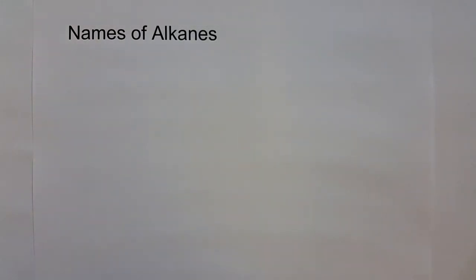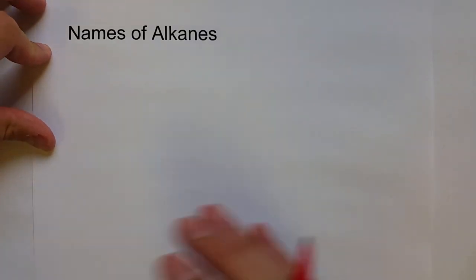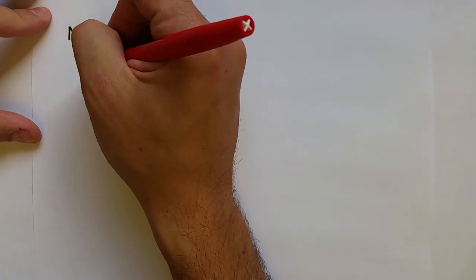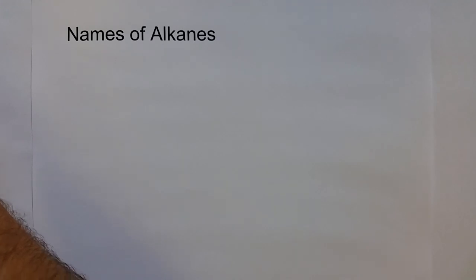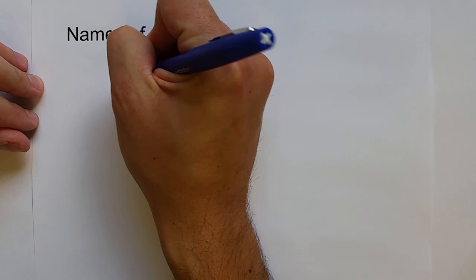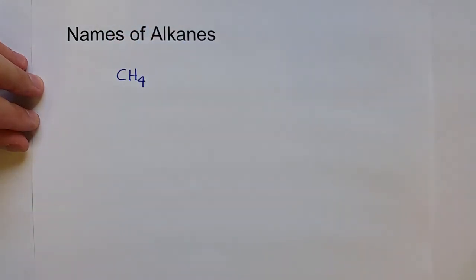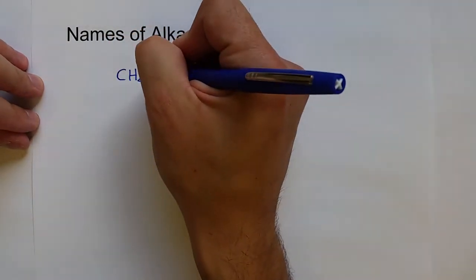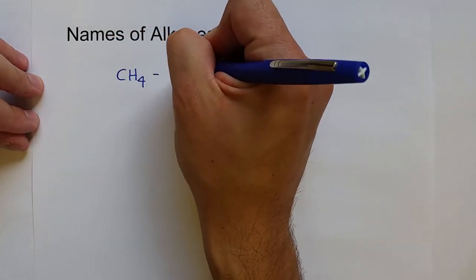The next thing we're going to want to be able to do is to come up with names for all of our alkanes. There's a simple naming system that's based off the number of carbons in the hydrocarbon. The first couple you kind of just have to memorize — there's not really a systematic way to name them. The first hydrocarbon, of course, is CH4, one carbon, and it has the name methane.